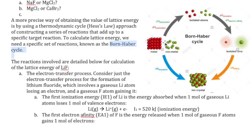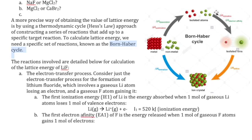Notice that if you take the reverse process — going from the naturally occurring forms of the metals and non-metals directly to the ionic crystal — that value is the same as the enthalpy of formation from thermochemistry. So this whole process is a cycle: if you know three of these things, you can figure out the fourth. We're going to use the formation enthalpy along with sublimation, bond dissociation, ionization energy, and electron affinity to figure out the lattice energy.